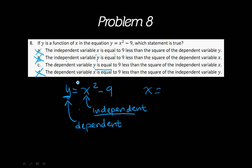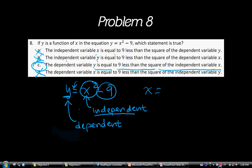Is equal to. So here's my is equal to. 9 less than, so here's 9 less than, the square of the independent variable x. And there's the square of x. So that's why C works out to be your answer. So here's my answer.